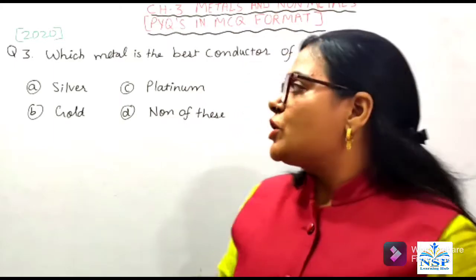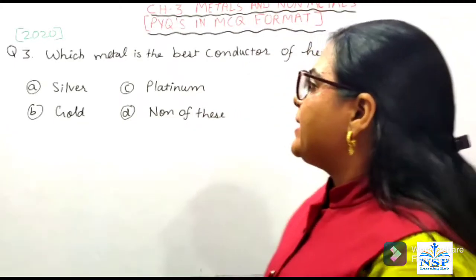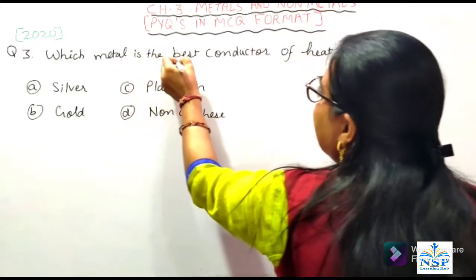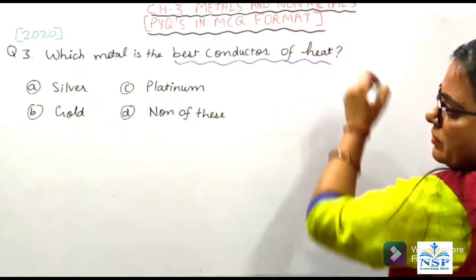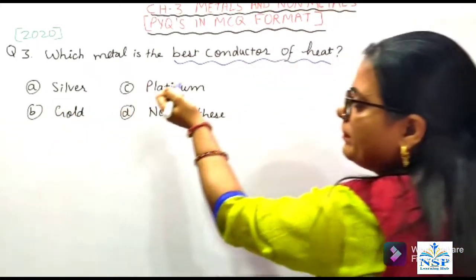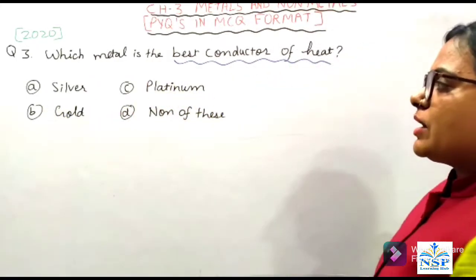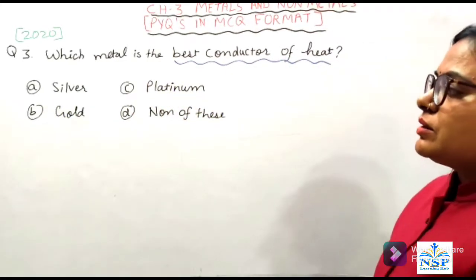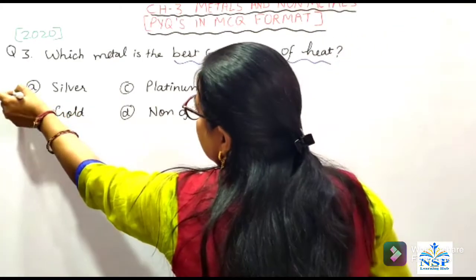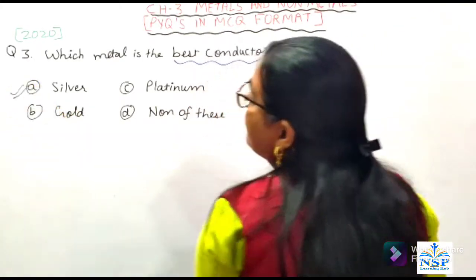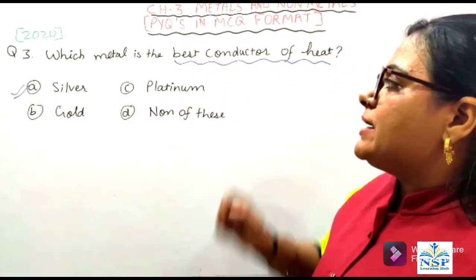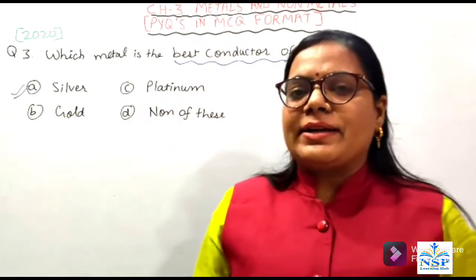Question number 3: which metal is the best conductor of heat? Options: (A) Silver, (B) Gold, (C) Platinum, (D) None of these. Silver is the best conductor of heat because gold and platinum are least reactive metals.